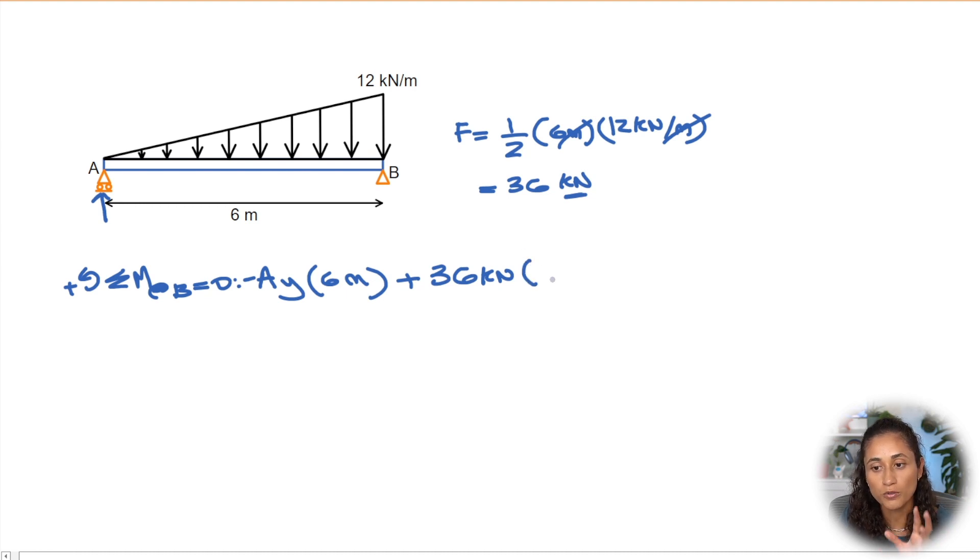The moment arm for the triangle is going to be the distance from B, because that's where we're taking the moment, to the centroid of the triangle. We're taking the centroid of the triangle because we usually assume that the force of this distributed load is acting at the centroid.